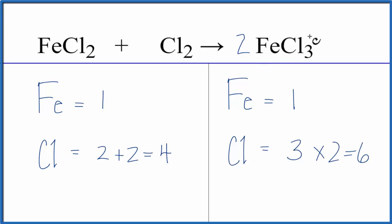And then this two, it applies to everything, so one iron times the two, that'll give me two of those. Let's fix the irons, and then we can change the chlorines if we need to. So we need two irons here, we have one times two, that'll give us two.